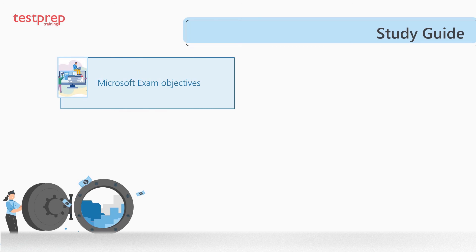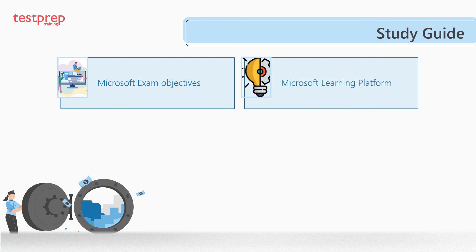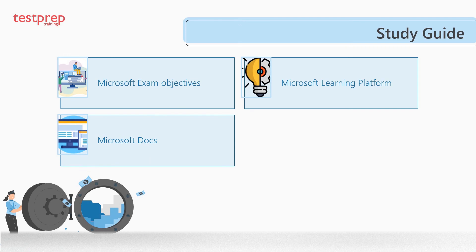Now let's discuss the preparatory guide. First, Microsoft exam objectives: candidates should get proficiency and familiarity with the exam objectives. Second, Microsoft Learning Platform: Microsoft provides learning platforms covering various resources and details necessary for exam preparation; candidates can visit the official Microsoft website for study guides and exam patterns. Third, Microsoft Docs: Microsoft documentation is the main knowledge source for the exam, providing detailed information about exam topics, concepts, and essential areas.